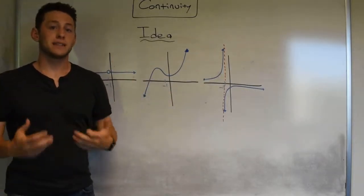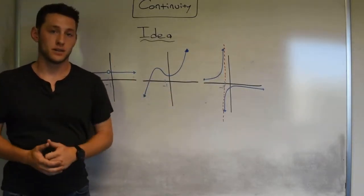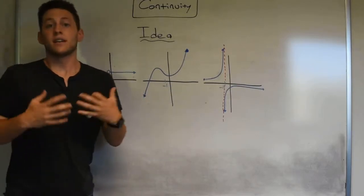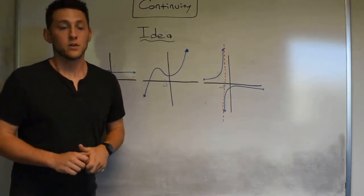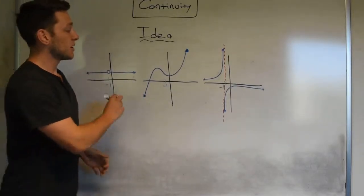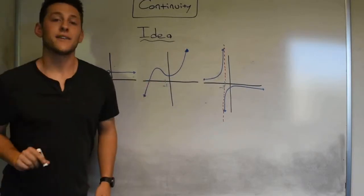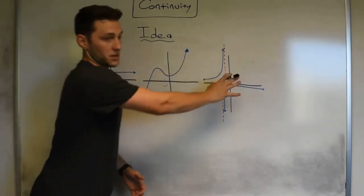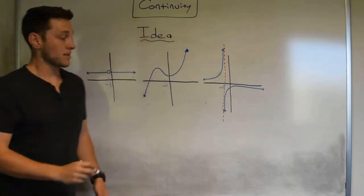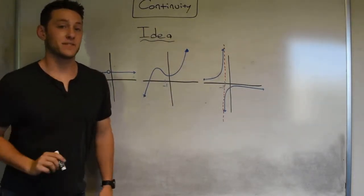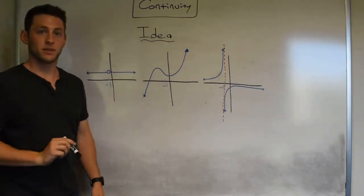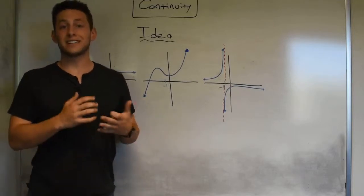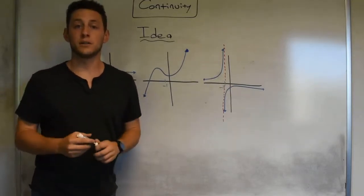Now there seems to be something pretty inherently different between these two outer graphs and the middle graph, and this is actually going to be the idea behind continuity. One way you can capture these differences — which works especially well for our class — would be that while drawing the second one you did not have to lift up your pencil, while drawing the other two there were points in which you did have to lift up the pencil. This is going to be our first intuitive idea of what continuity is.